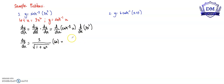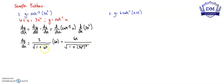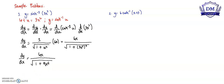Simplifying, we have 6x all over the square root of 1 plus (3x squared) squared, which gives us the derivative of y with respect to x equal to 6x all over the square root of 1 plus 9x to the 4th power.